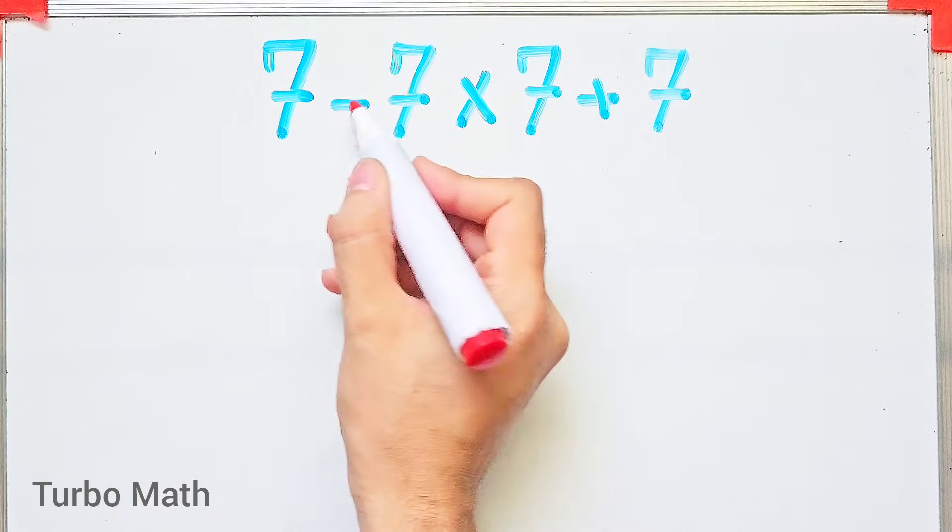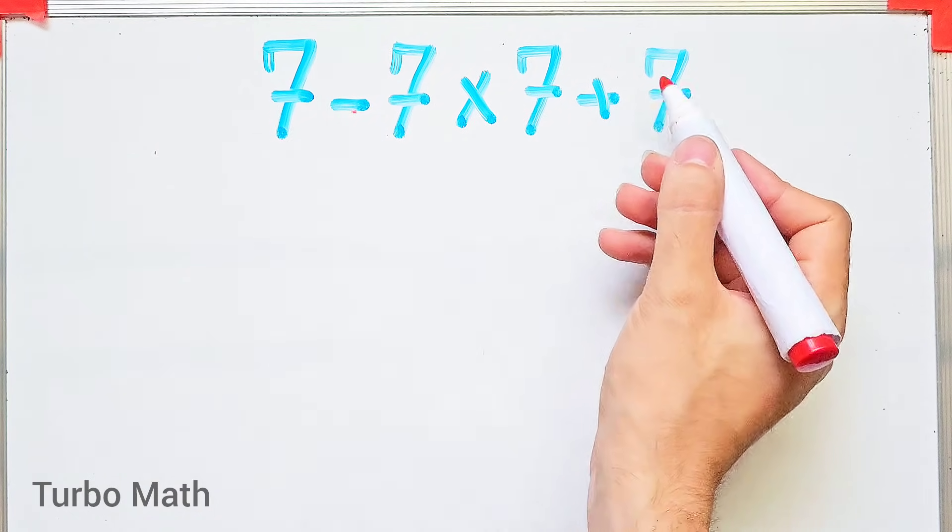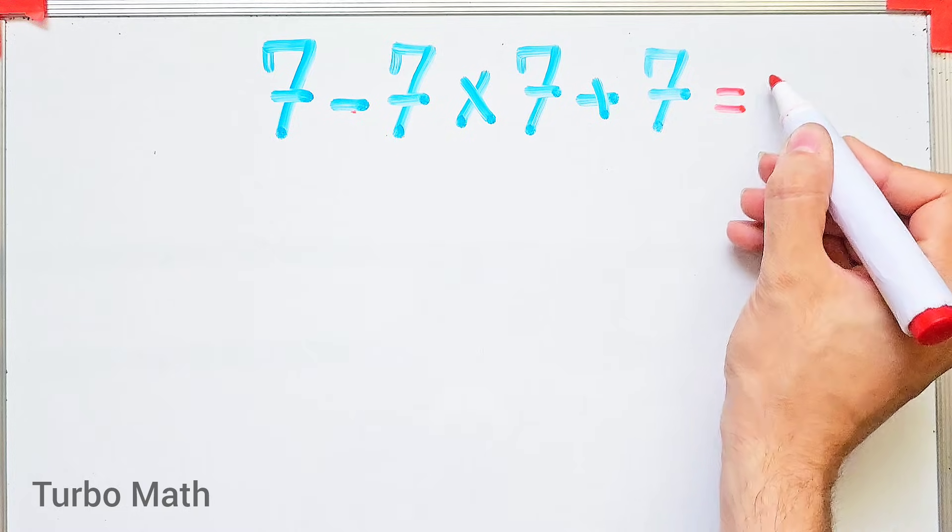Seven minus seven times seven plus seven. What is the answer of this question? Hi friends and welcome to Turbo Math channel.